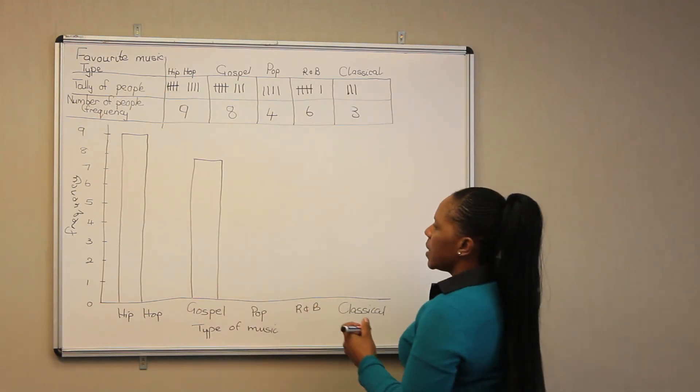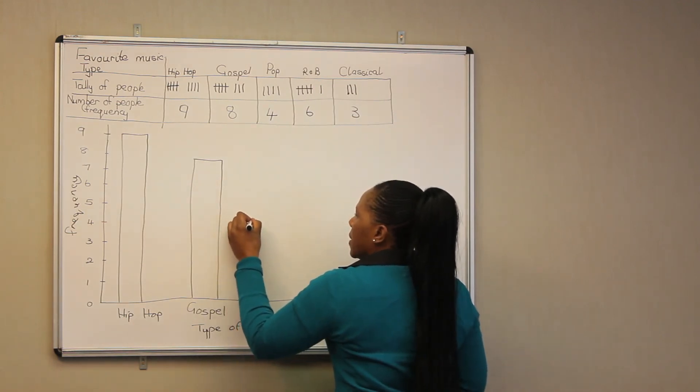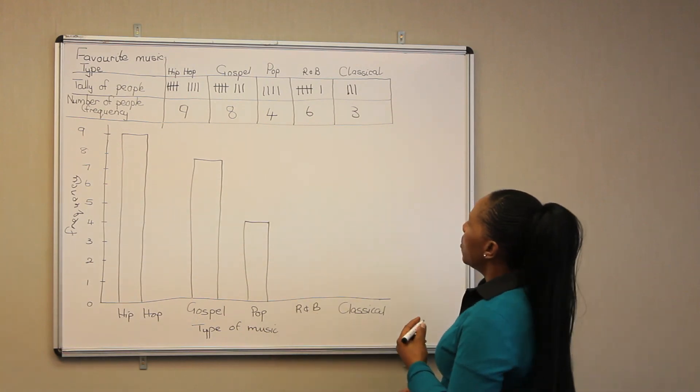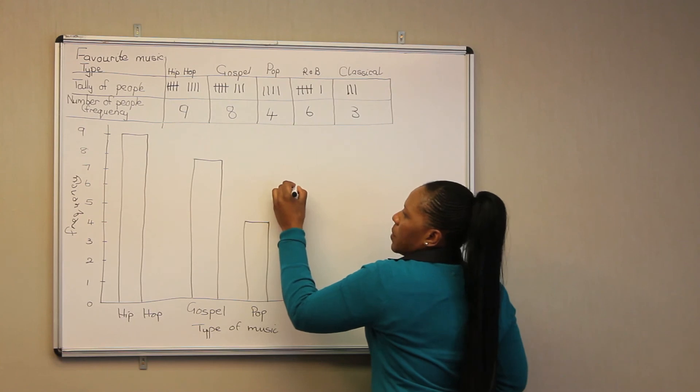For pop music, we only have four, which goes up to somewhere there. For R&B, we have six people, which will go up to somewhere there.